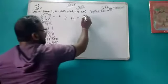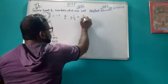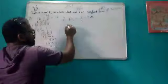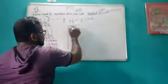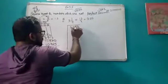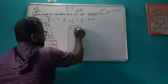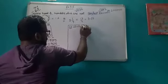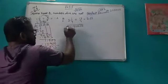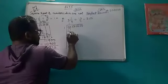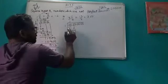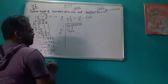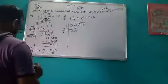The next question is the square root of 3 whole 1 by 4, which equals 13 upon 4, that is 3.25. We will use the same long division method with 3.25. We put zeros here, then one pair here, then here, then here again.